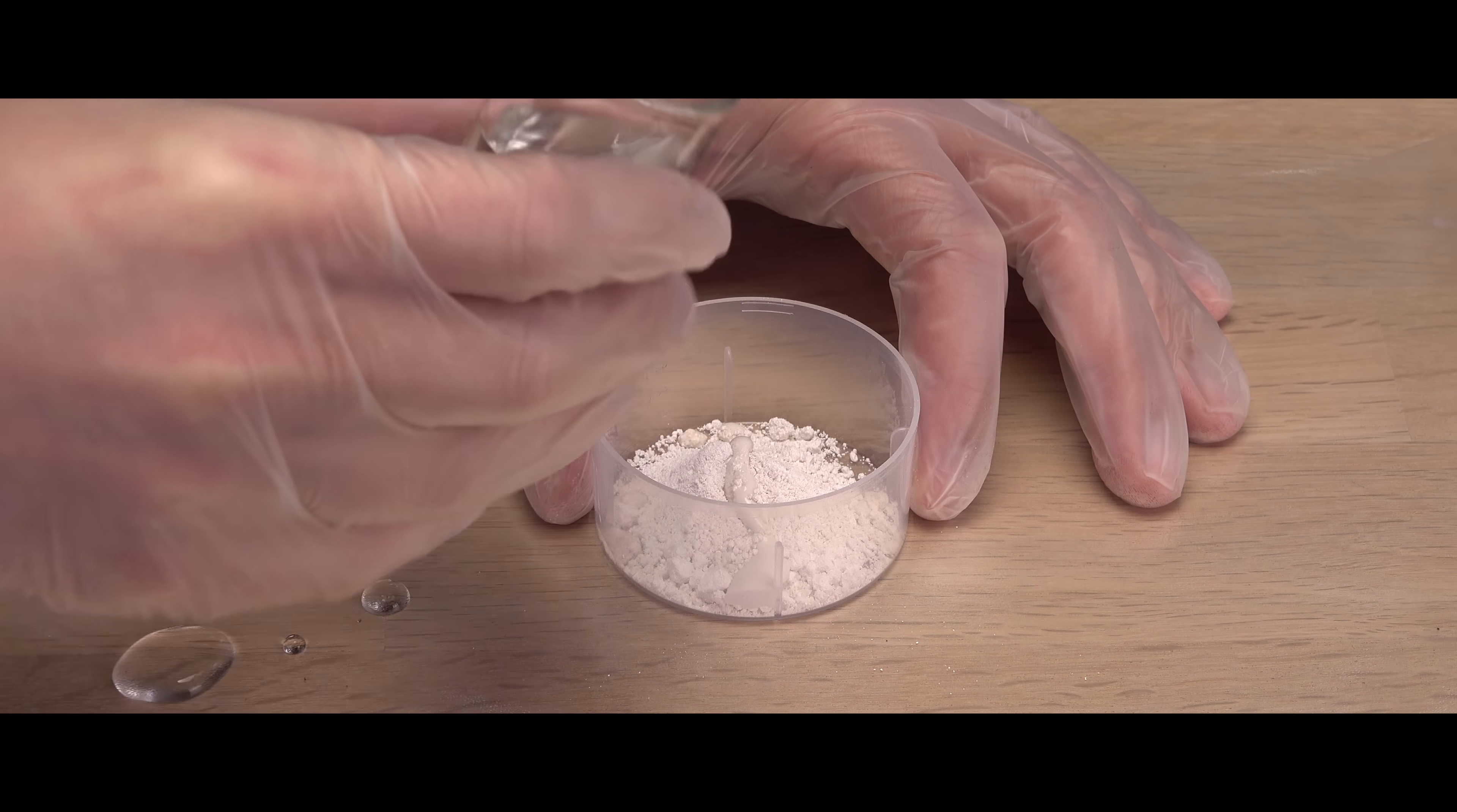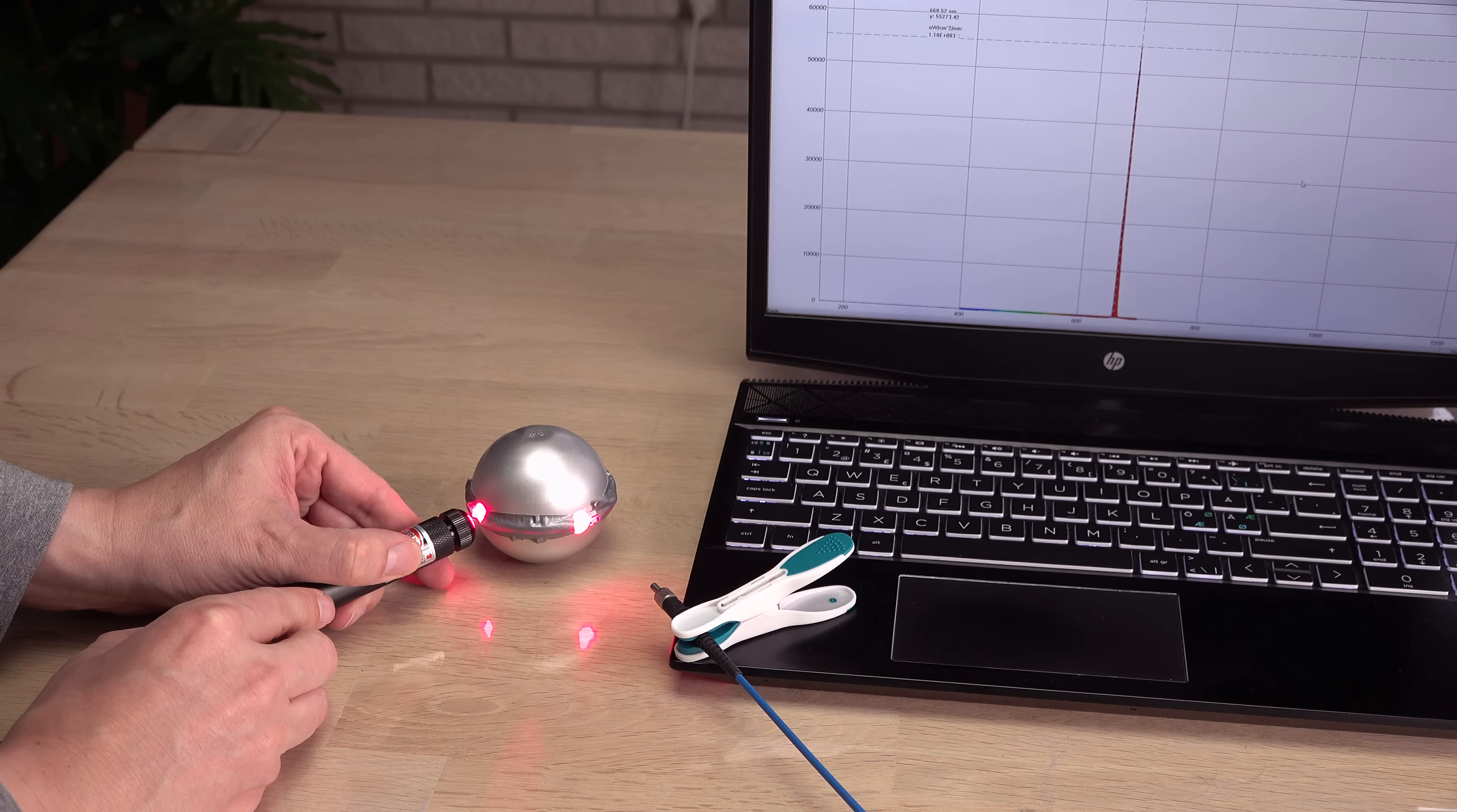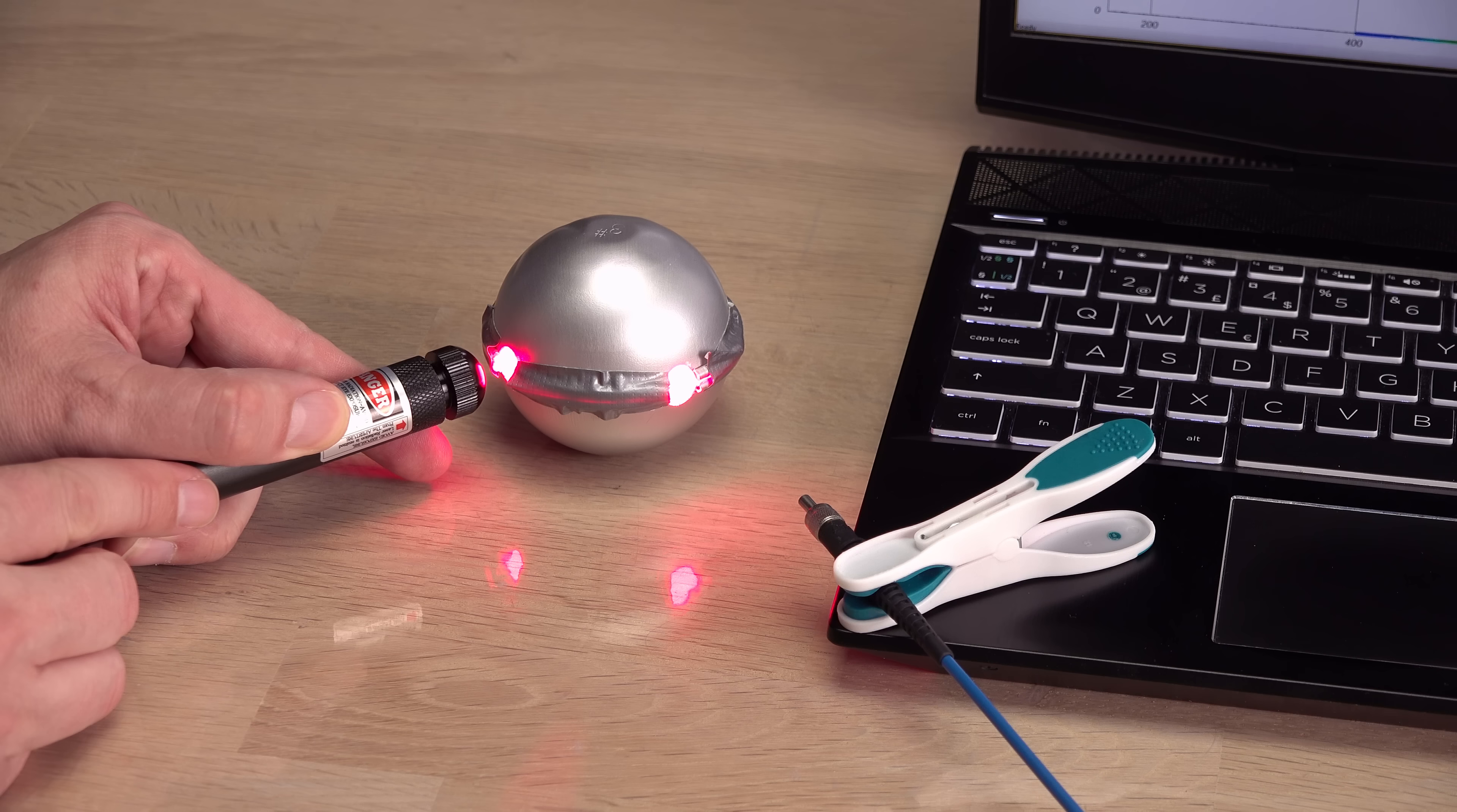Considering how sloppy I was in all parts of the construction, the Ulbricht sphere works really well. As intended and for little money and effort. It is faster and easier for me to set up and aim for a stable solid reading with the sphere, and with much less risk of overexposing the spectrometer if I start at a long enough probe distance. I didn't even have to consider how the focus was set on the focusable lasers.